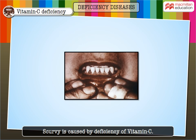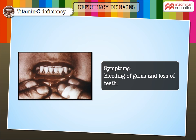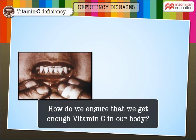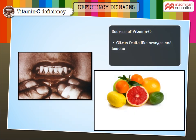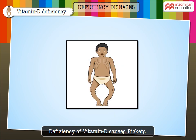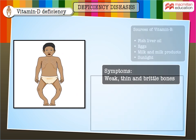Scurvy is caused by deficiency of vitamin C. People suffering from scurvy start bleeding from their gums, and in extreme cases they may even lose their teeth. To ensure enough vitamin C, eat citrus fruits like oranges and lemons, and other fruits like guavas, carrots, and tomatoes, which are excellent sources of vitamin C.